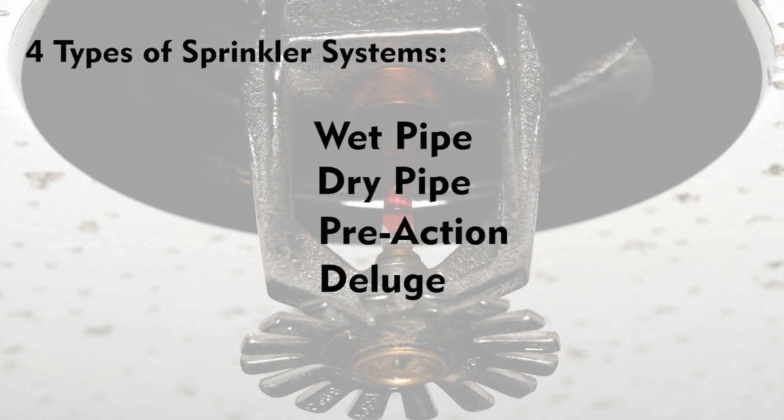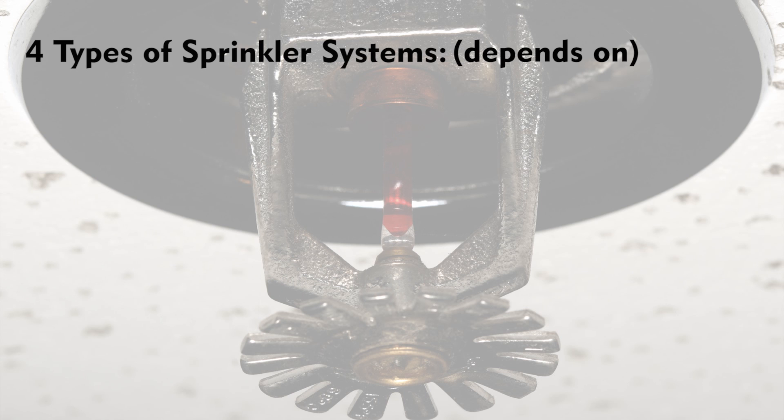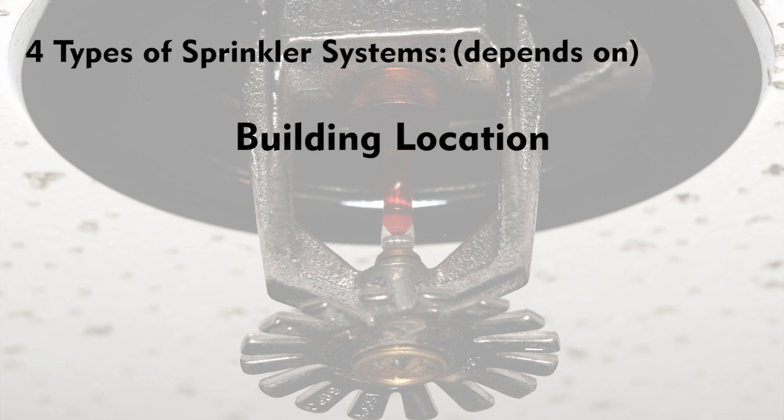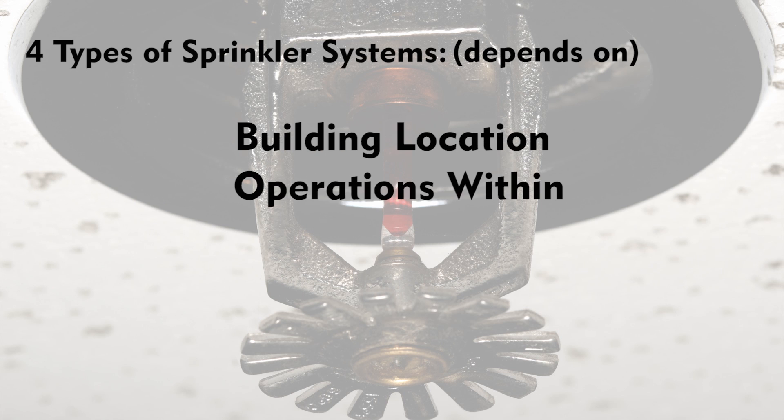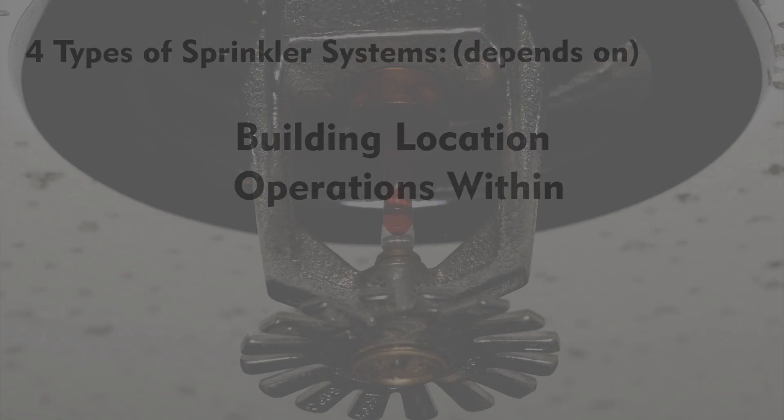Within these two designs there are four types of sprinkler systems: wet pipe, dry pipe, pre-action, and deluge. The type of sprinkler system found in your building will depend on your building's location and operation.